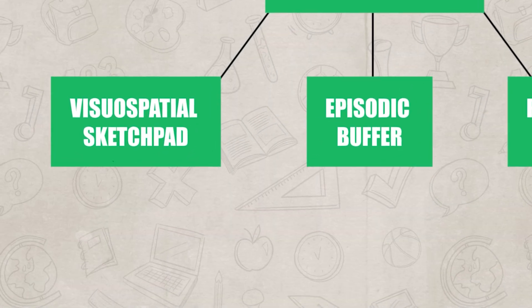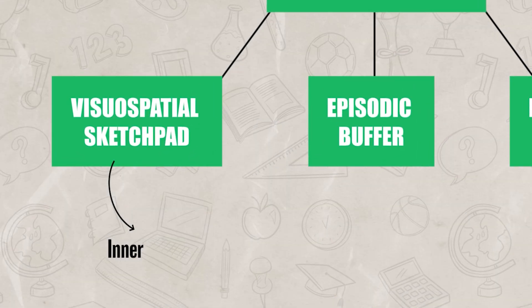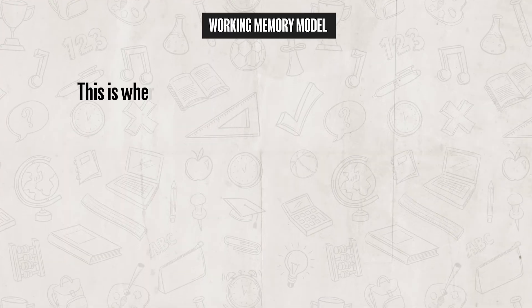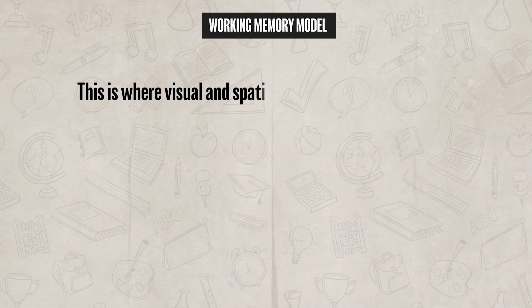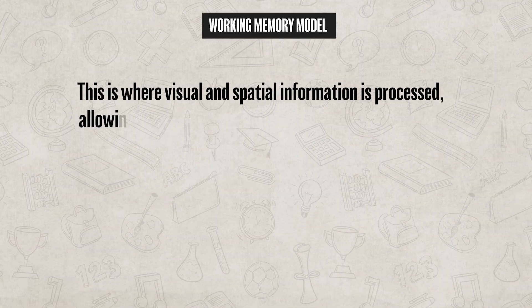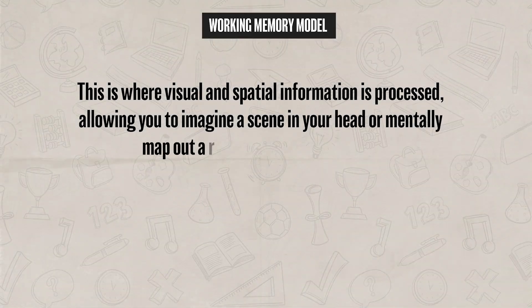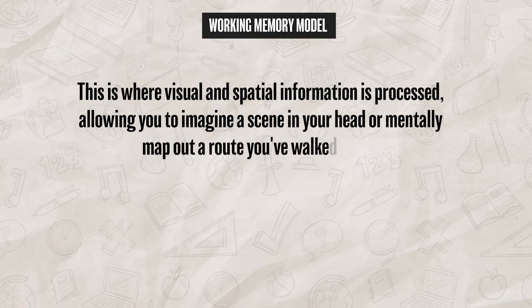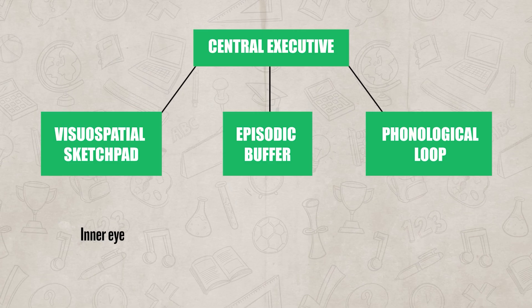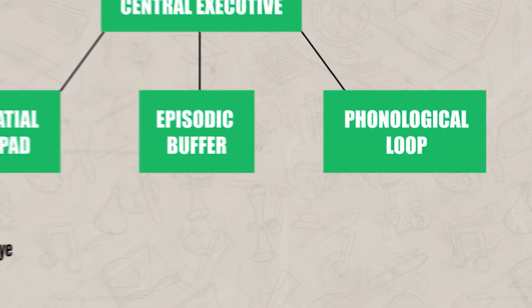First is the visual-spatial sketchpad, often called the inner eye. This is where visual and spatial information is handled — it's what lets you imagine a scene in your head or mentally map out a route you've walked before. For instance, if I asked you to picture your bedroom right now and count how many windows it has, you would use your visual-spatial sketchpad to do so.